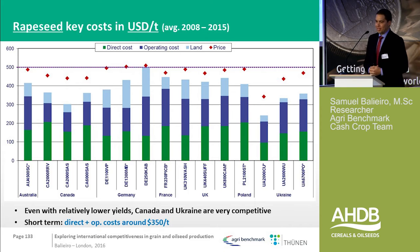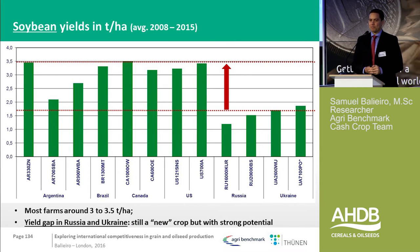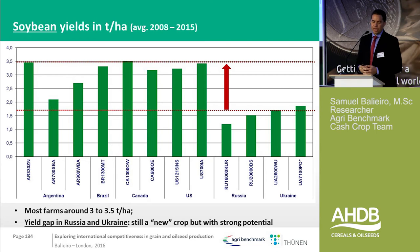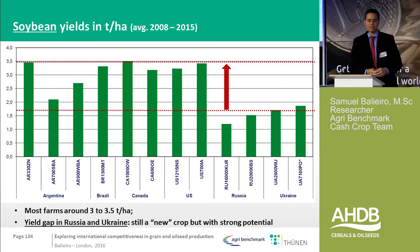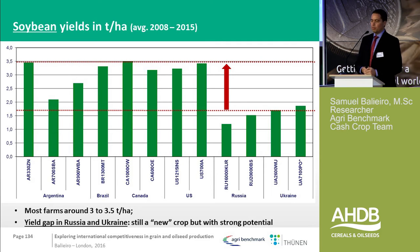Moving to soybeans — it's a much more concentrated market. We see Brazil, Canada, US, and Argentina as very high-yielding systems at 3 to 3.5 tons per hectare. On the other side, Russia and Ukraine are at 1.5 tons per hectare.